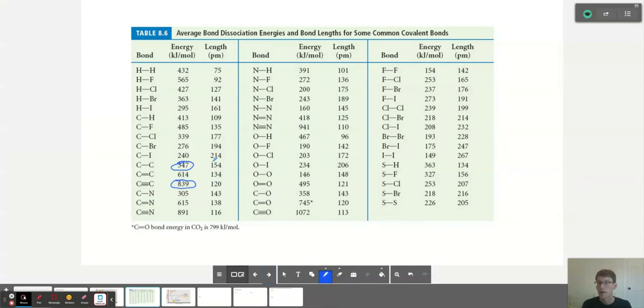But also the bond distance decreases. So we go from 154 picometers when they're only singly bonded to when they're really tightly held together, it's only 120 picometers. And you'll see that trend in other cases like with C to N bonds and others.